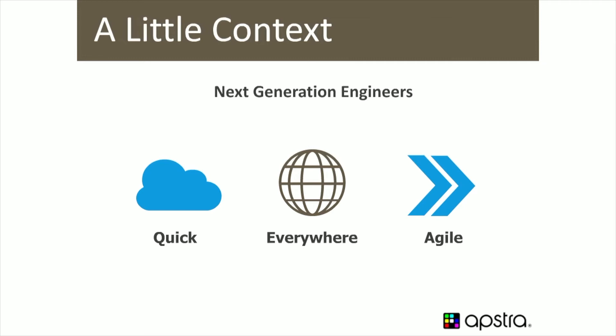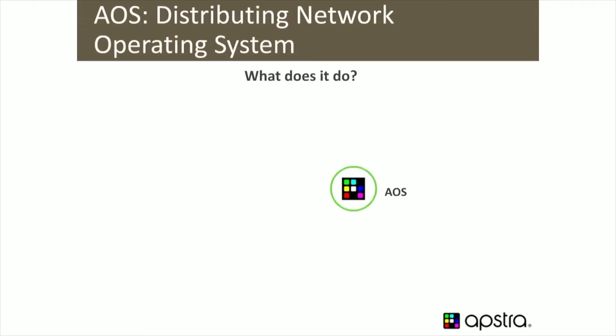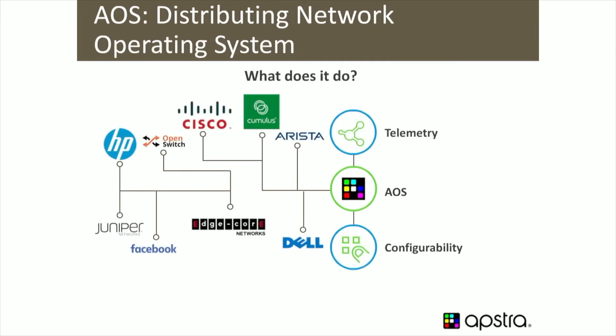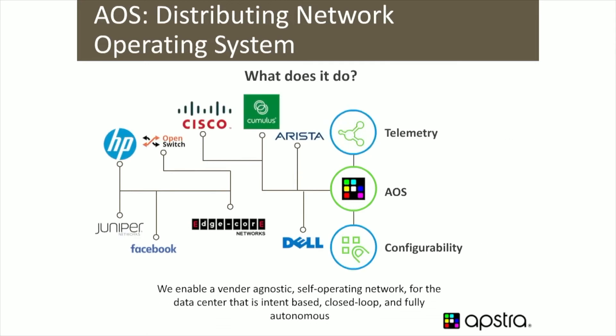And third, he's got to be agile — dodging bullets and outages in real time, like Neo in the Matrix dodging bullets. Enter Apstra: AOS is a distributed operating network system that manages the underlying vendor OS and builds an intent-based configuration from your blueprint and input, providing specific telemetry and configurability designed to that intent.